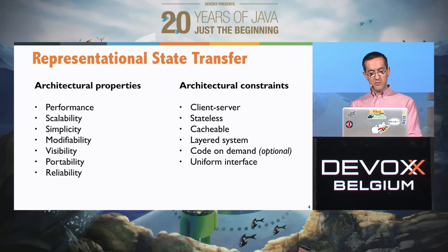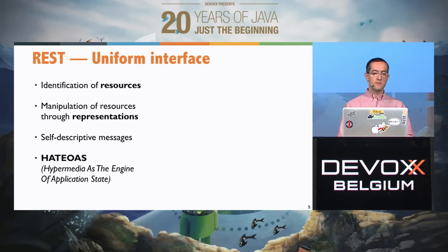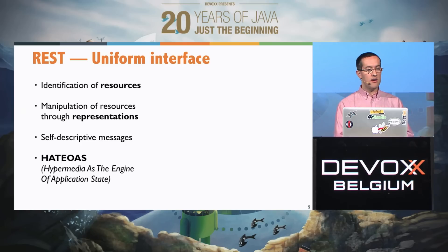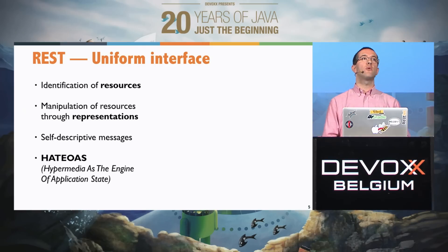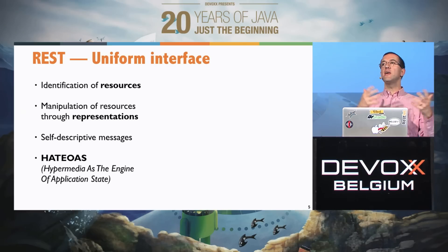We will focus a little bit more on the uniform interface aspect. In REST, you identify resources — things that are actually important to your business domain. Let's say I build an API for the DevOps conference schedule. There are important concepts like speakers, sessions, the agenda, rooms, etc. All these things should be represented and identified through distinct resources. You also want to manipulate those resources, and for viewing and creating them you deal with representations.